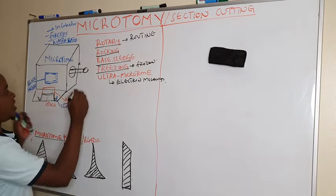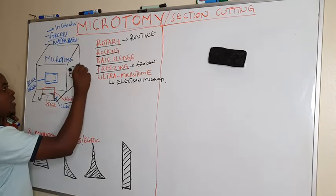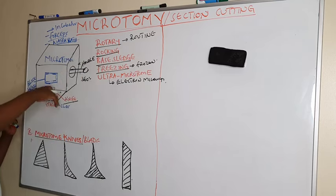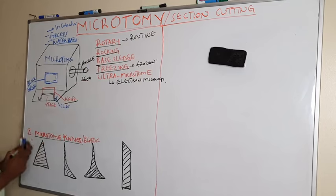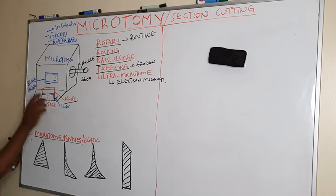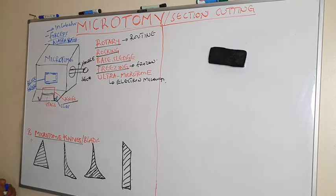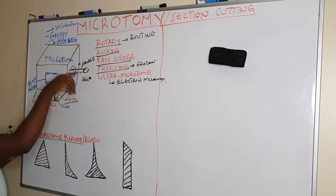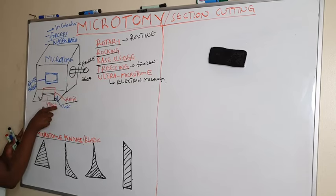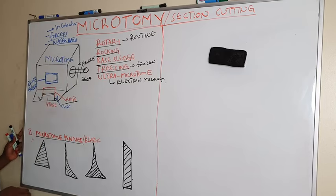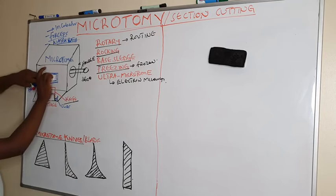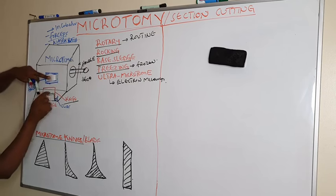The handle is moved by the right hand at an angle of 360 degrees, as the block on the block holder moves past the stationary knife. The structure of the Rotary Microtome includes the handle, the body, the knife holder, and the block holder. The block which is embedded is always placed on the block holder, and when we move the handle, it makes the block move past the stationary knife.